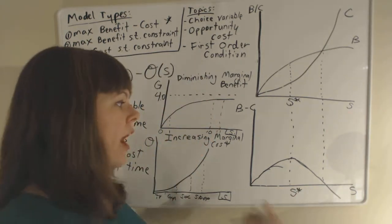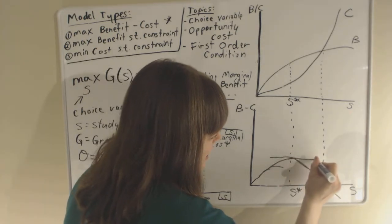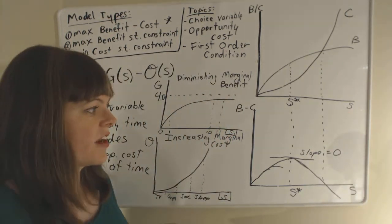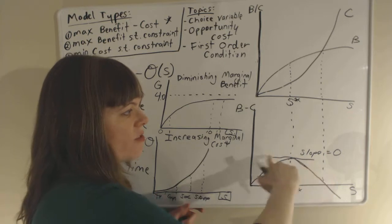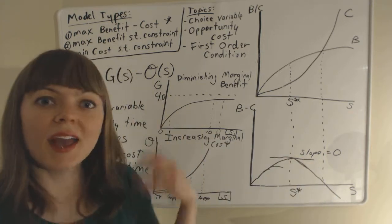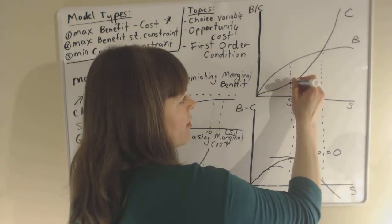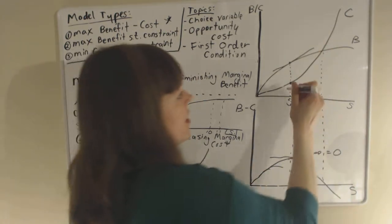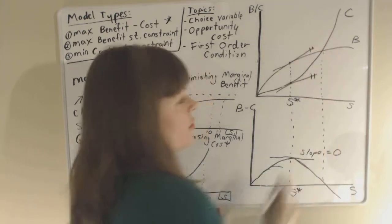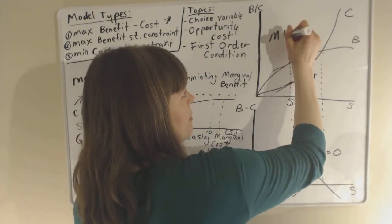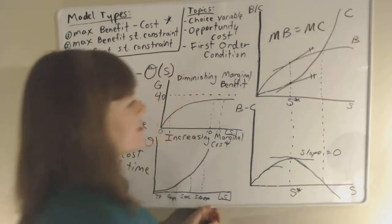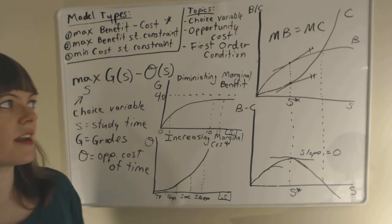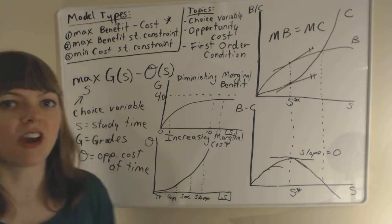The optimal amount always occurs where the slope of the tangent line equals zero — that is our first order condition. The first order condition is simply setting the derivative of the maximization function equal to zero. It also happens to be the point where marginal benefit — given by the slope of the tangent of the benefit function — exactly equals marginal cost. So marginal benefit equals marginal cost, and that's the first order condition for this benefit-minus-cost problem where we choose study time to maximize grades minus opportunity cost.